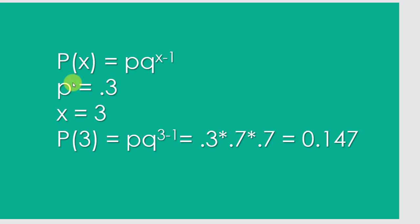If we use that formula in a case where x is equal to 3, the basketball player makes his first basket on the third shot, p is 0.3, he's got a 30% chance each time, and we just do this math. We get the probability of x equal to 3, p times q to 3 minus 1 is equal to 0.3 times 0.7 times 0.7, since q would be squared, gives you 0.147.